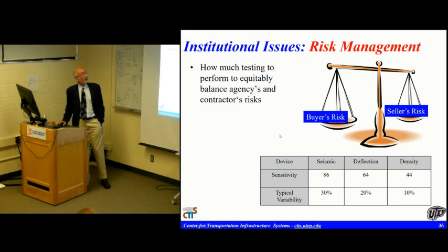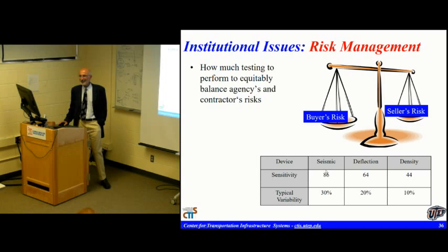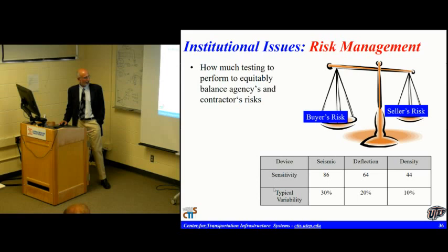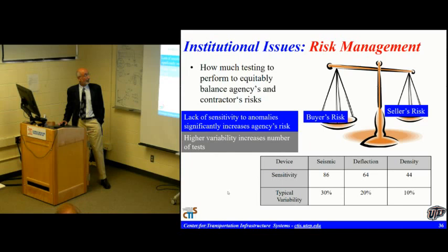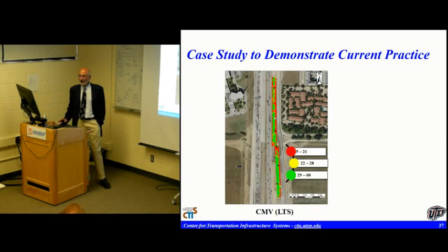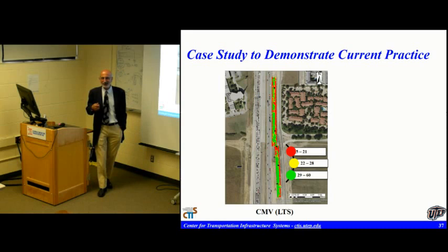Another institutional issue is risk management and device sensitivity. This was on I-10 and US-65 — Harold van Quintus built in known defects the day before and then hired consultants who didn't know where they were to find them. Seismic found 86 percent of the defects, deflection found 64 percent, and density found 44 percent. But then it's the issue of variability: 30 percent, 20 percent, 10 percent respectively. So you need to consider sensitivity versus variability together.